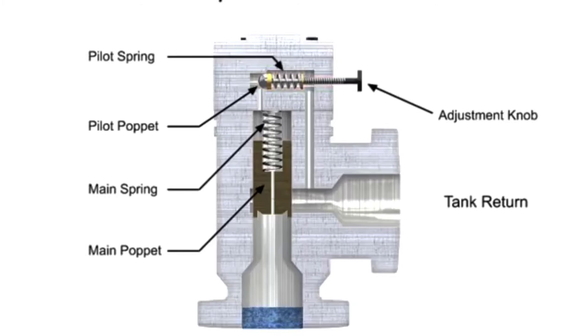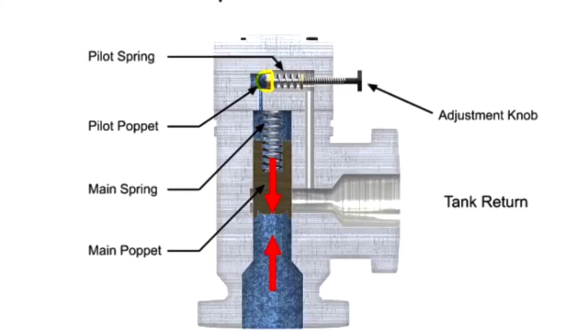As long as pump line pressure is less than the relieving pressure set on the control knob, the pilot poppet will remain closed. Since the pilot poppet is closed, the pressure in the main spring chamber is the same as the line pressure. Since these pressures are equal, there is no pressure drop from one side to the other and the main poppet also remains closed.